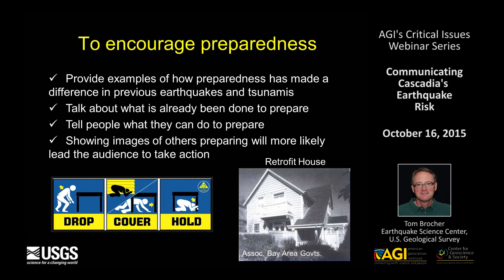To encourage preparedness, one good approach is to show how preparedness has made a difference in the past. One example involves two adjacent houses built the same way at the same time with the same materials in Santa Cruz. The owner retrofitted one house before the 1989 Loma Prieta earthquake but not the other. The retrofitted house sustained only limited damage, while the unretrofitted house was split apart in four sections, had to be jacked up, and placed on a new foundation. A little retrofitting can go a long way.